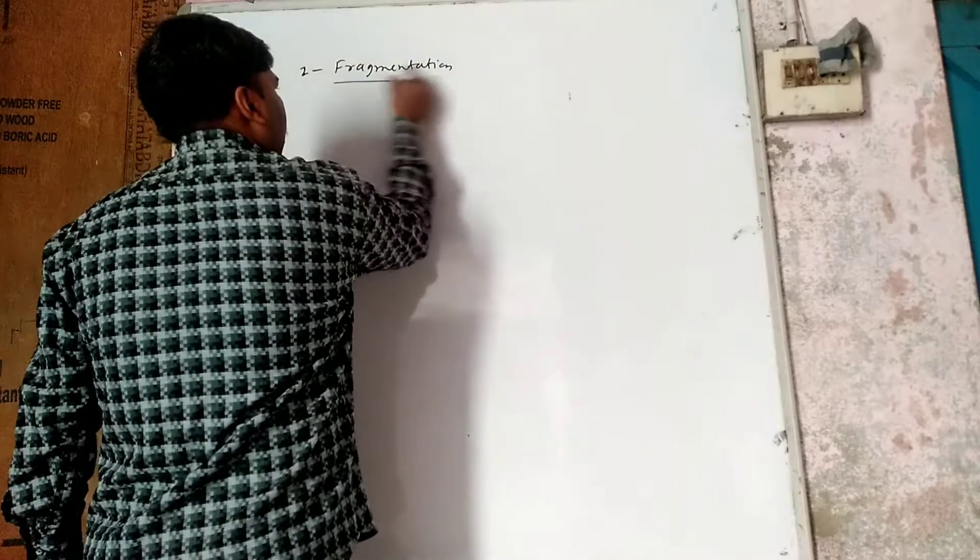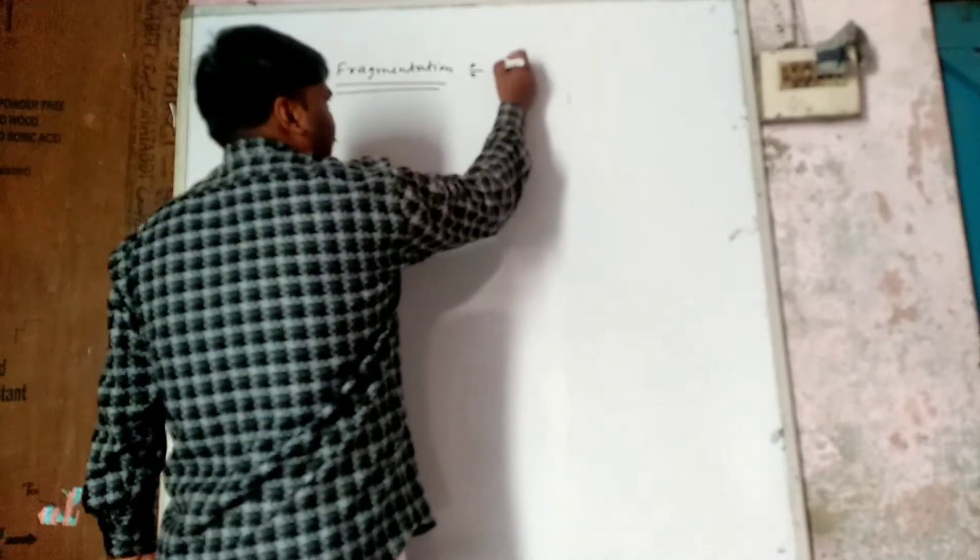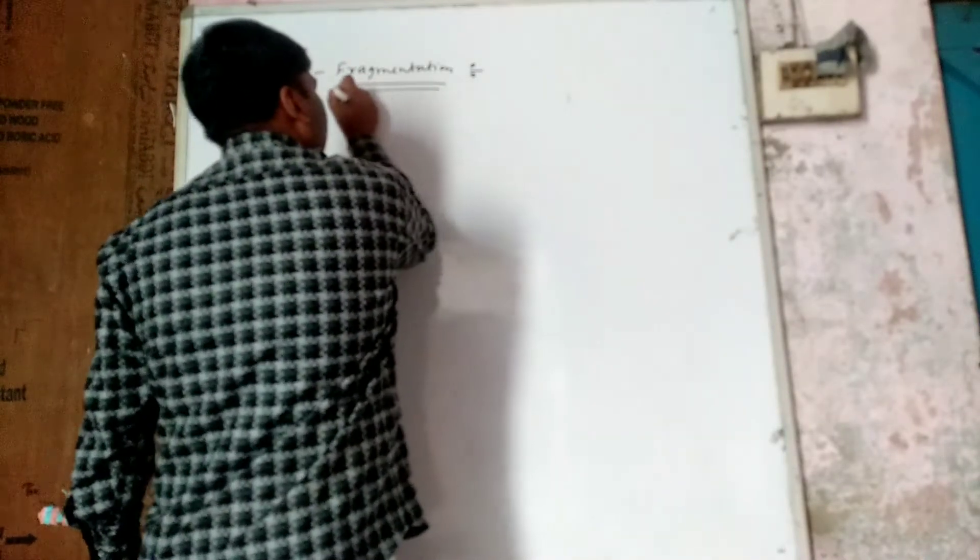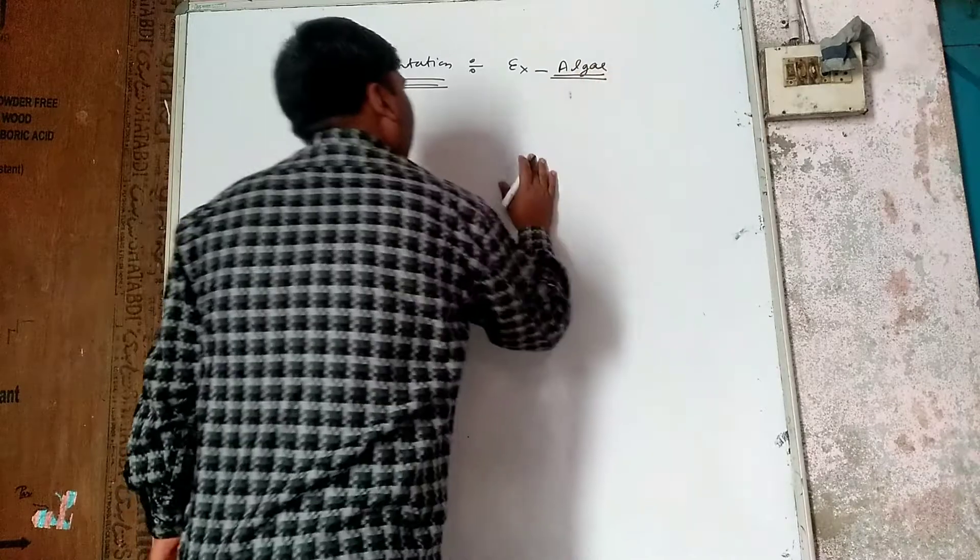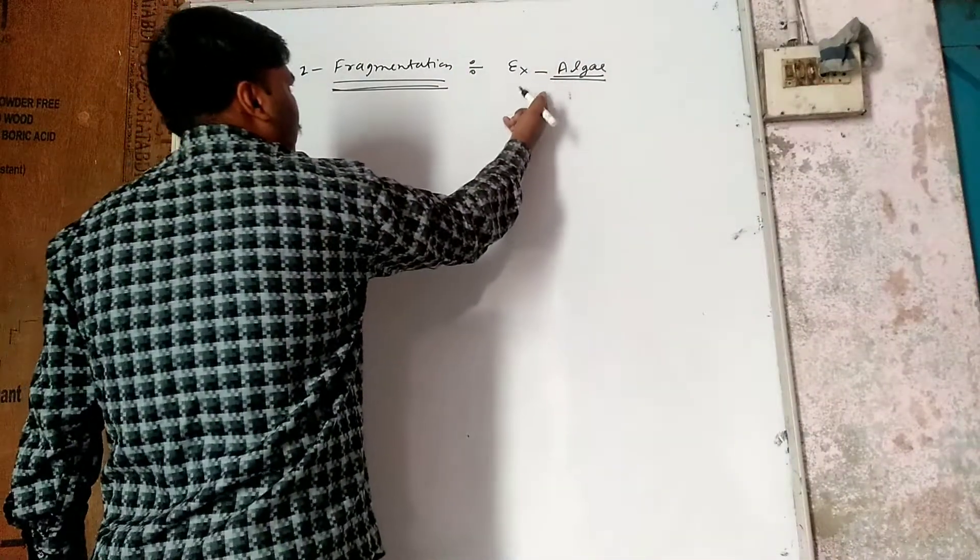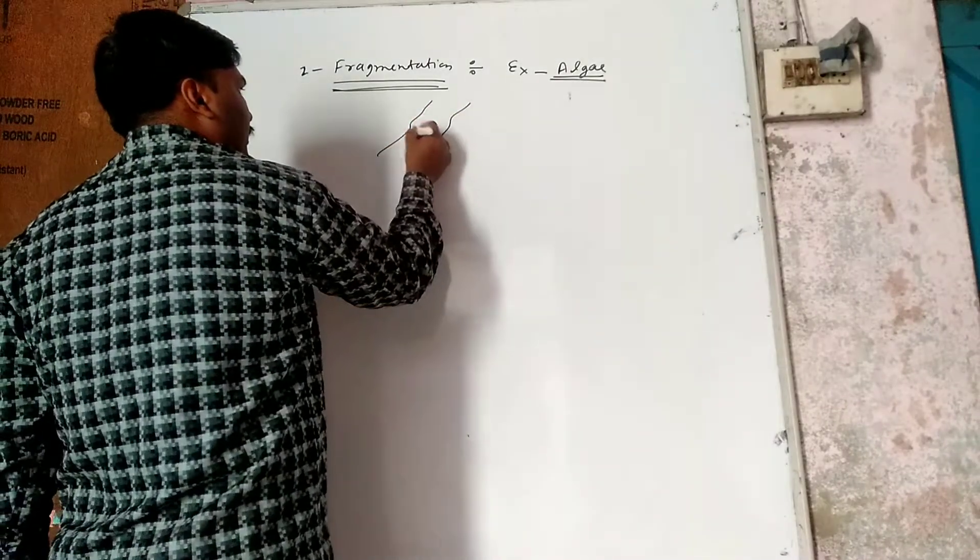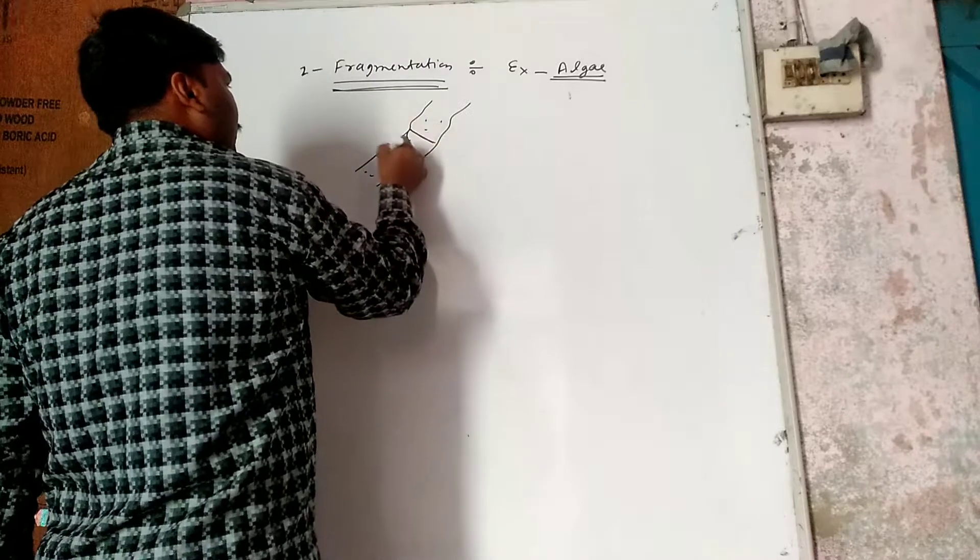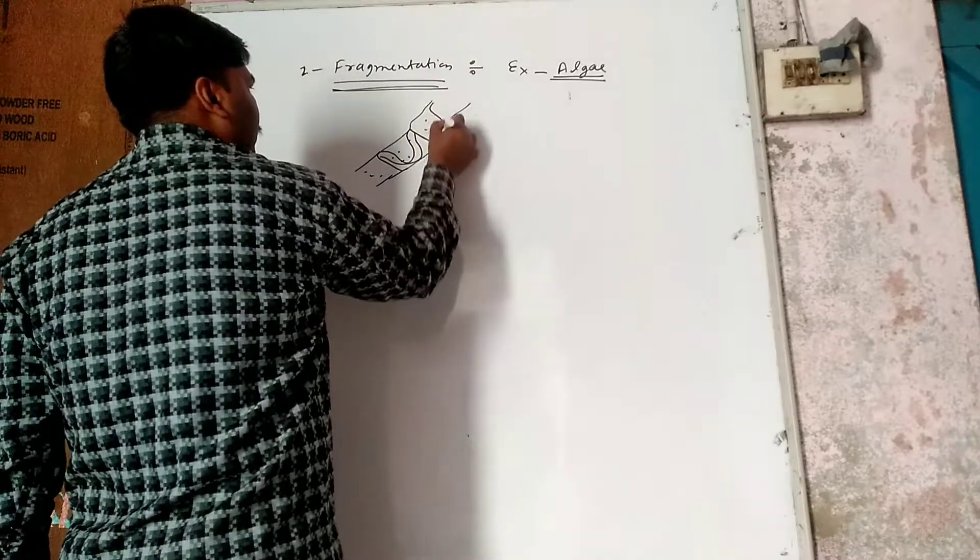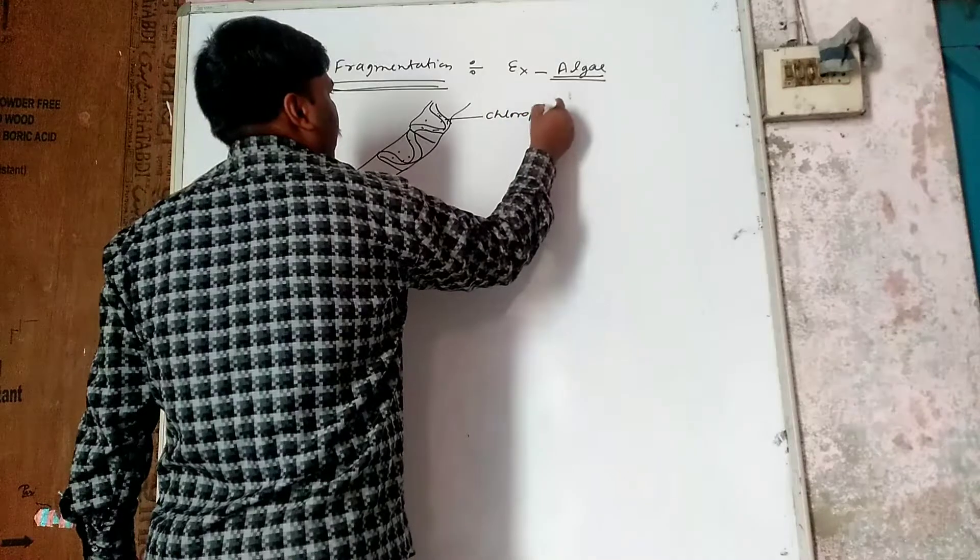Fragmentation is one of the common methods of asexual reproduction which are present in algae as well as plants. In algae, every alga shows fragmentation. As examples, I told you about Spirogyra.